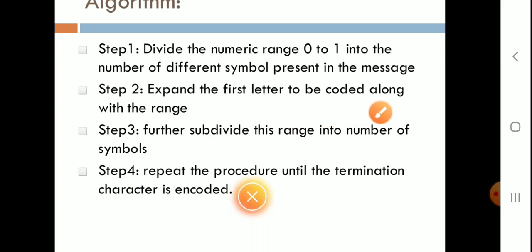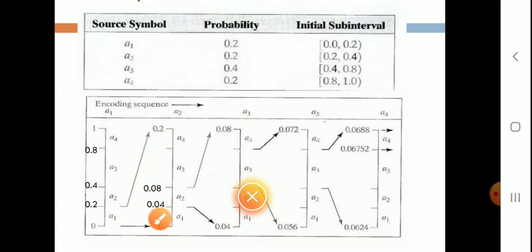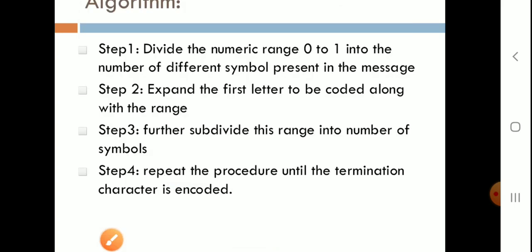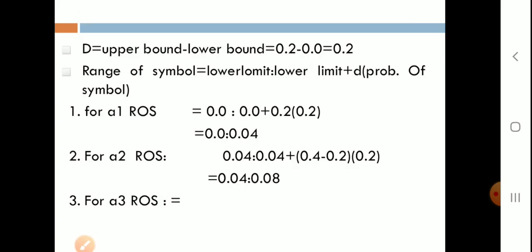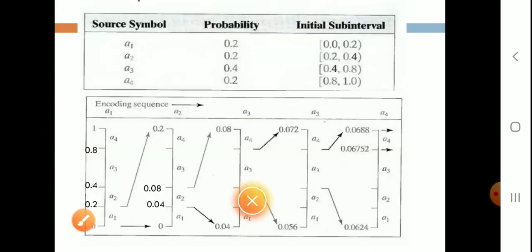Expand the first letter to be coded along with the range. Further, subdivide this range into the number of symbols and repeat the procedure until the termination character is encoded. First we expand, then we calculate the range values based on probability. To find the sub-intervals, we use the formula where D is the distance, calculated as upper bound minus lower bound.